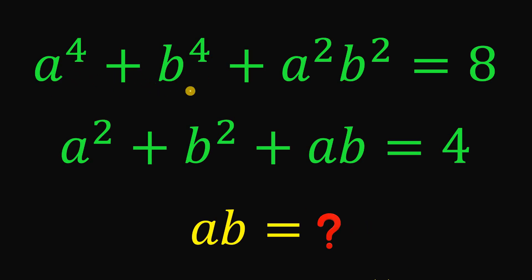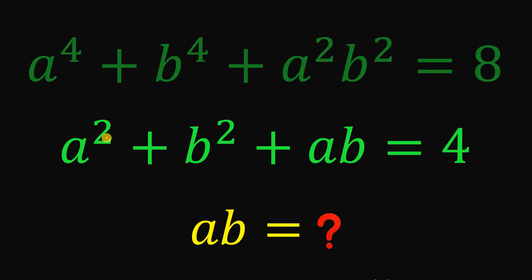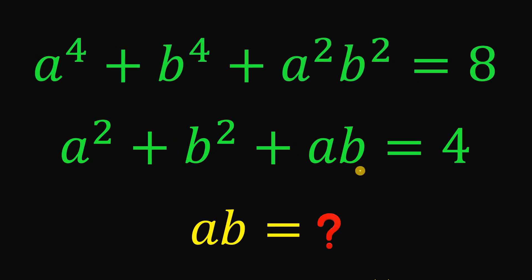Given these equations: a raised to the fourth power plus b raised to the fourth power plus a squared b squared equals 8, and a squared plus b squared plus ab equals 4, then the goal is what is the numerical value of ab?